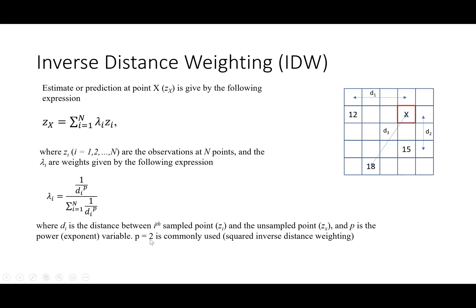Most of the time we use p equal to 2, which we can call squared inverse distance weighting, but because it is so commonly used we just call it inverse distance weighting. The weight is the inverse of distance, so farther points get less weight and closer points get higher weight with respect to x. Using a larger value of p causes farther points to get lesser and lesser weight compared to points nearest to x.